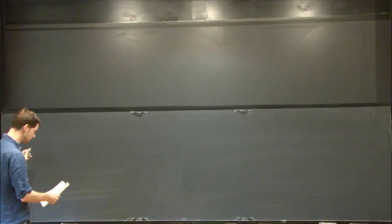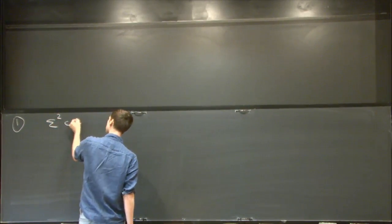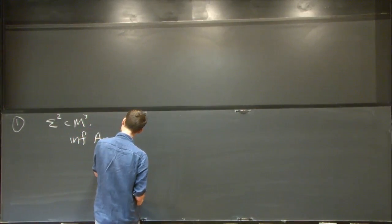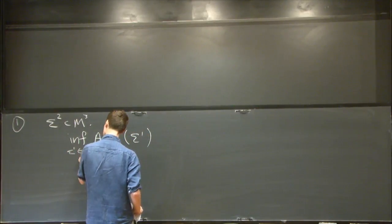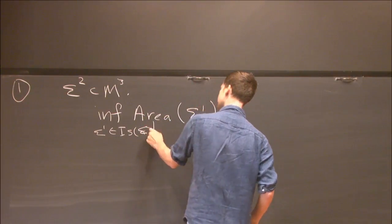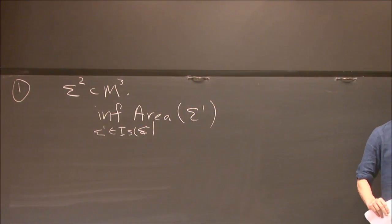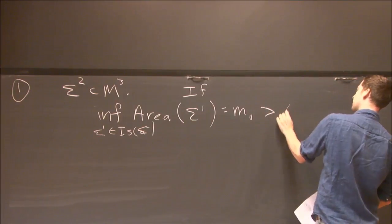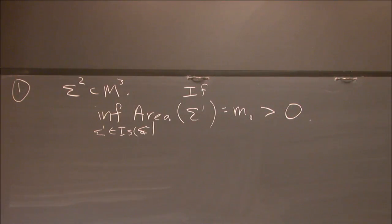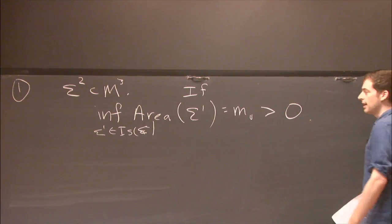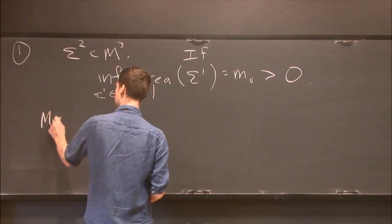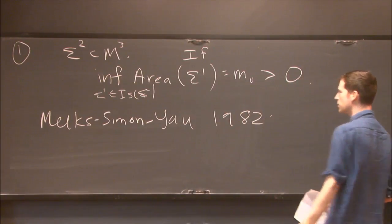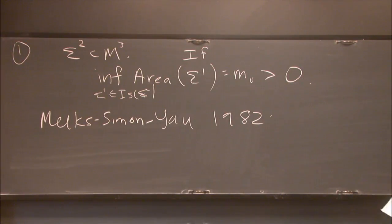If I start with a surface in a three-manifold, one thing I can do is look at all surfaces isotopic to the starting surface and try to minimize area in that isotopy class. If this infimum is bigger than zero — meaning you cannot shrink your surface down to a point — there is a theorem due to Meeks, Simon, and Yau from 1982 which says you can minimize area and actually produce a minimal surface.